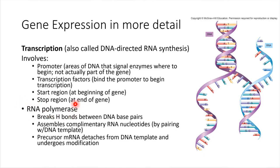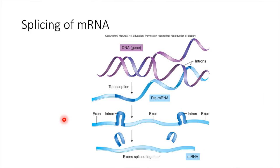There are promoter regions, and then there are also transcription factors — molecules that come and bind to the promoter and facilitate binding of enzymes like RNA polymerase that are needed for transcription to take place. RNA polymerase is the actual enzyme that carries out transcription. It builds the RNA molecule using DNA as a template, breaking hydrogen bonds in DNA and attaching RNA nucleotides together.